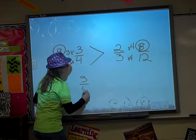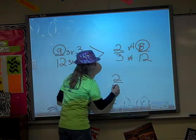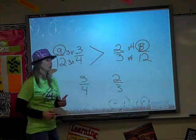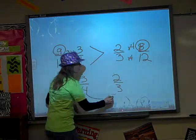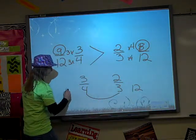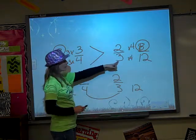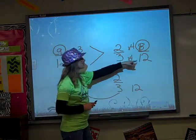If you have 3 fourths and 2 thirds, I think this is really kind of cool. You start with finding your common denominator, which is 12.